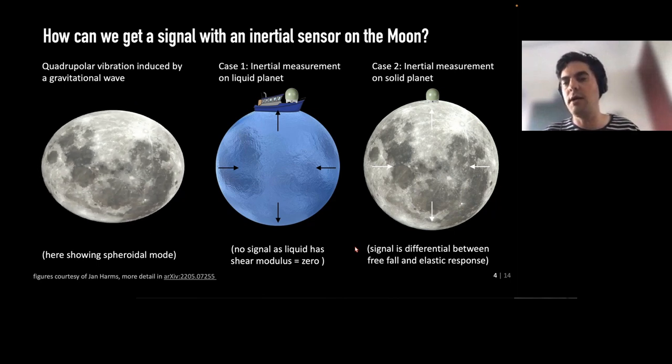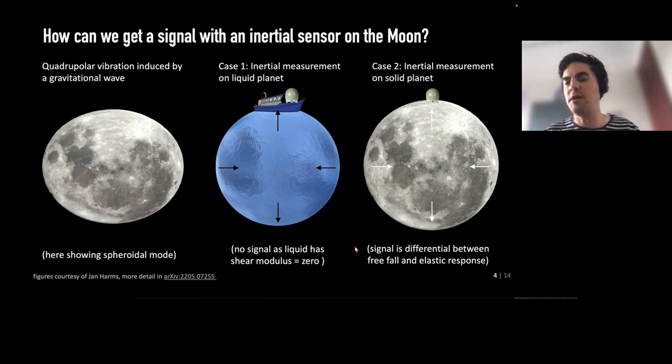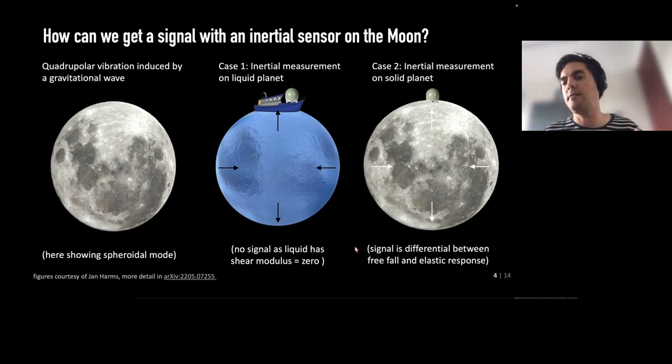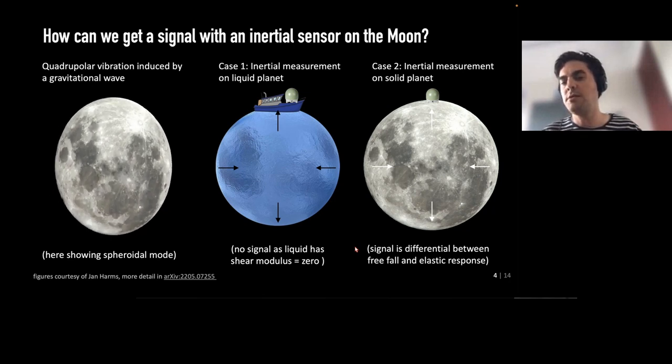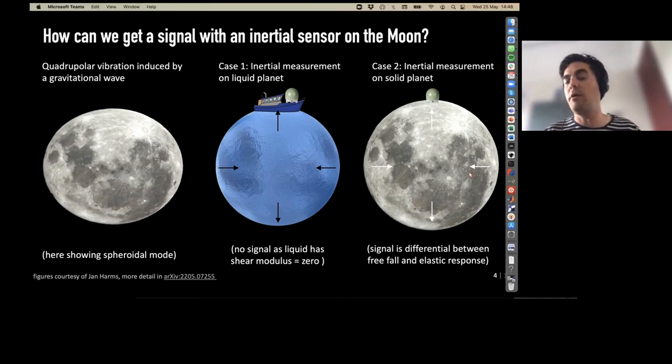So how does that work for a solid planet, or in this case the Moon? Now the stiffness of the Moon itself will make sure that the Moon doesn't follow along with the changing gravitational wave potential, but it resists it a little bit. So it has some sort of elastic response to that. However, the proof mass does move along with that changing gravitational potential. Therefore, you won't get what we saw in case one, and you will actually get a signal.